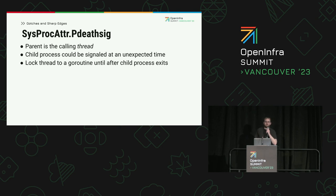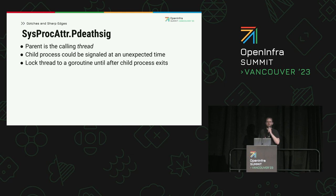The last gotcha I want to talk about is the parent death signal option. When starting a subprocess, you can instruct the kernel to send it a signal if the parent dies — very handy for ensuring you don't leak subprocesses if your process crashes. However, the kernel considers the parent to be the thread which started the subprocess. If some goroutine which locks and exits gets scheduled onto the same thread that you had previously used to start a subprocess, your subprocess will get signaled seemingly at random. You can guard against this by locking the goroutine you will be starting the subprocess from to its thread, and not unlocking it until after the subprocess exits.